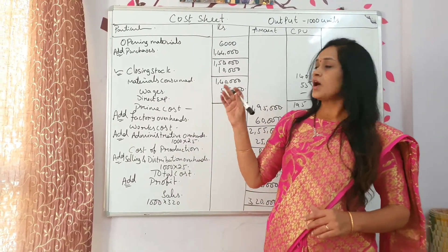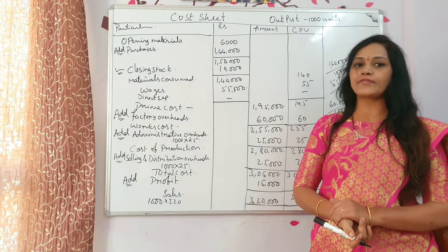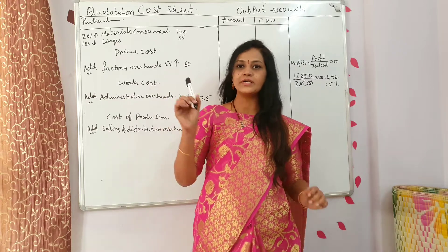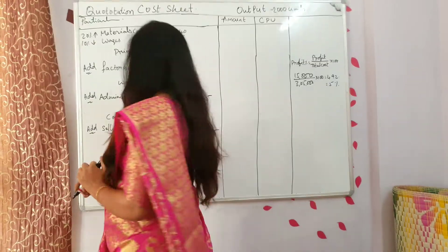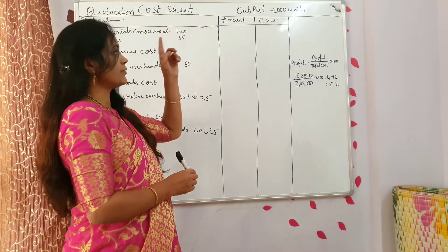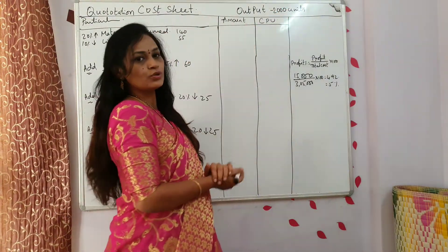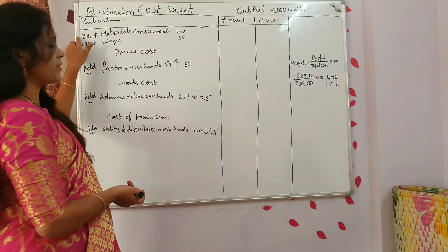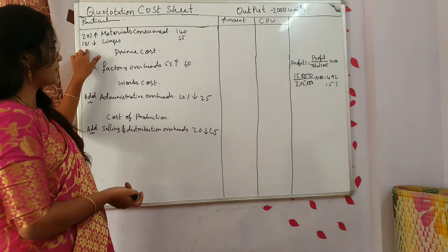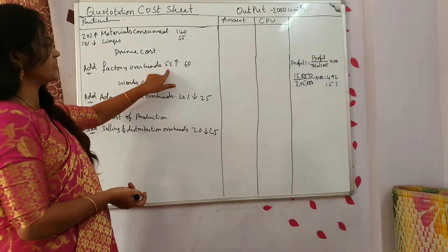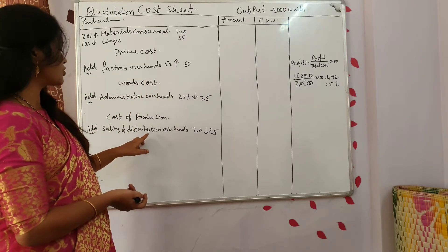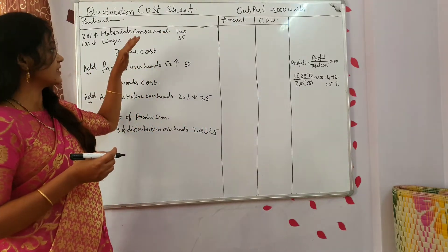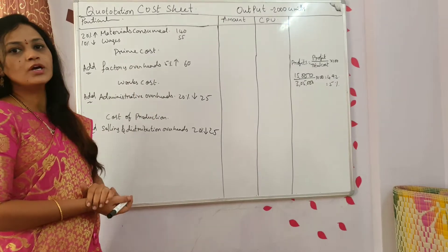Now, by taking these amounts and cost per units under consideration you have to prepare a quotation cost sheet. Now we start the quotation cost sheet. Let's see the given data. The last normal cost sheet was for 1000 units; here you are estimating for 2000 units with a few changes. Materials consumed has increased by 20%, wages has decreased by 10%, factory overheads increased by 5%, administrative selling and distribution overheads decreased by 20%.